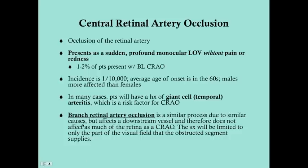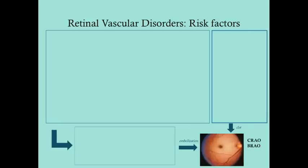Branch retinal artery occlusion is a similar process with similar causes, but involves a smaller clot affecting a downstream vessel, so it doesn't affect as much of the retina. It's much further downstream, affecting only the part of the visual field supplied by that obstructed segment.